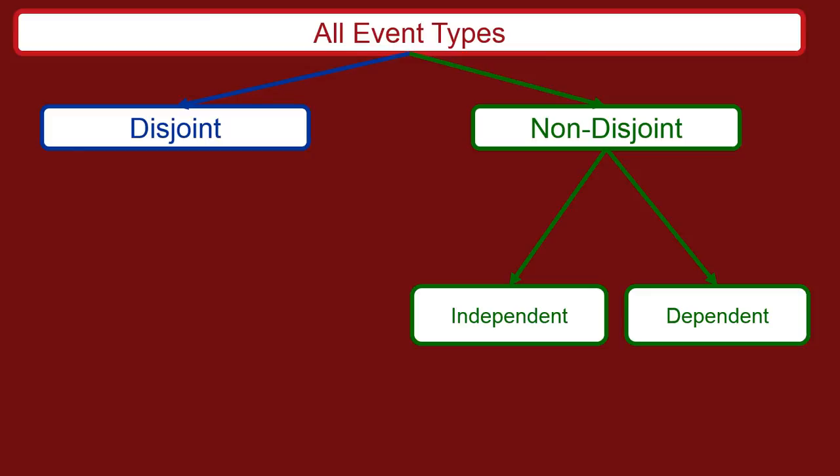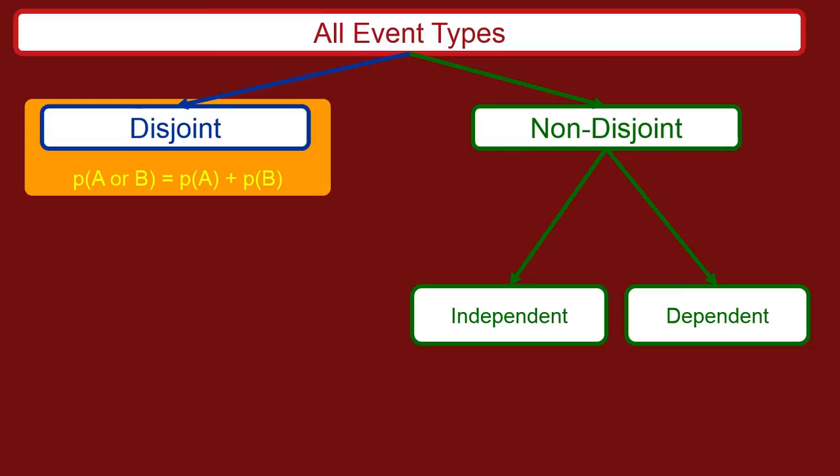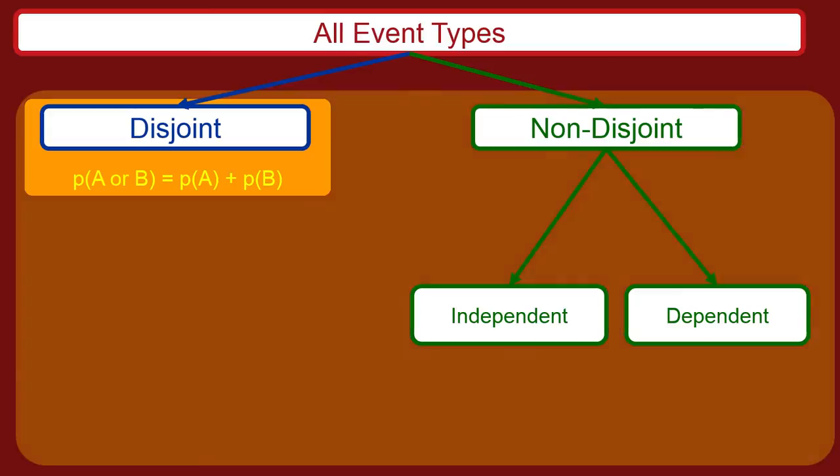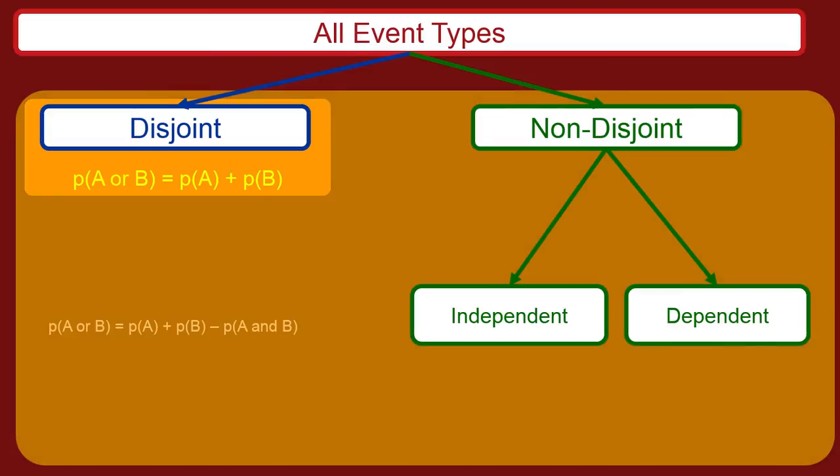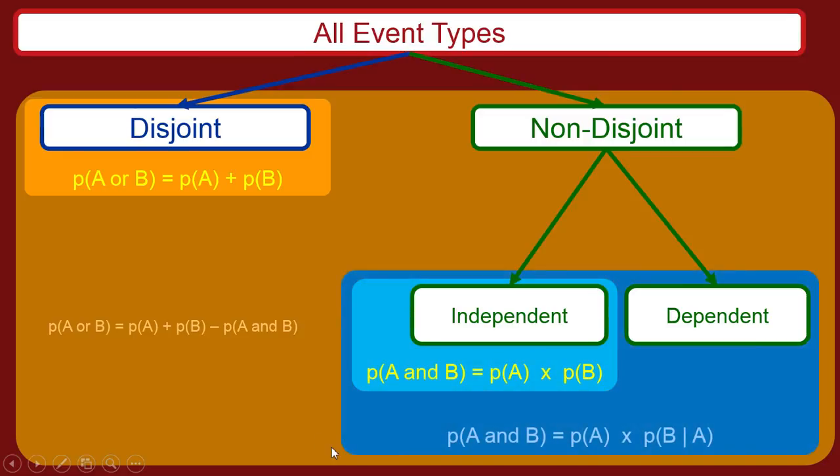We're going to talk about two separate concepts, two separate issues with events or outcomes. The disjoint versus non-disjoint, and there are two different versions of the addition rule - the specific addition rule and the general addition rule. But we're not going to worry about the general one. And then independent versus dependent, and there are two separate versions of the multiplication rule, which tells you the probability of A and B happening in the same frame of reference. We're only going to learn the specific one again, not the general one.